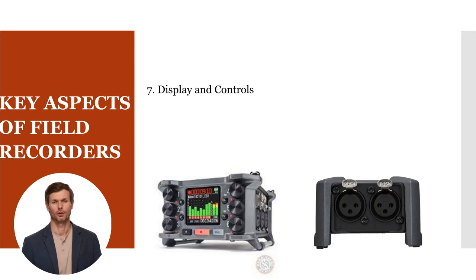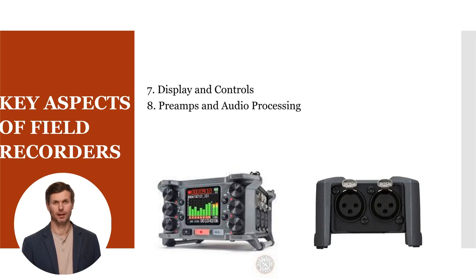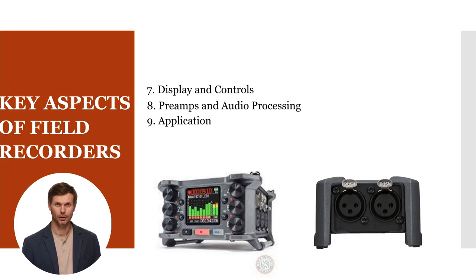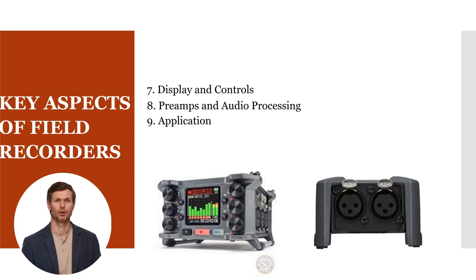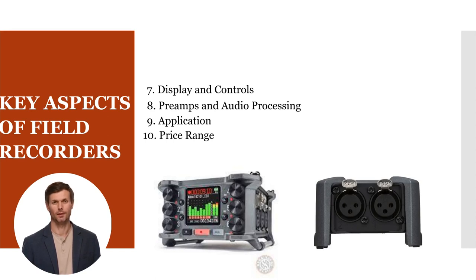Field recorders typically feature user-friendly interfaces with clear displays and easy-to-navigate menus, allowing users to adjust recording settings, monitor audio levels, and control playback. The quality of the microphone and high-quality preamps can provide clean, transparent audio capture. Some models also offer audio processing features like on-board effects and compression. Field recorders are used for capturing environmental sounds, wildlife recordings, location sound for film, podcasting, journalism, and more. They are available from affordable options suitable for hobbyists to high-end, professional-grade recorders used in the film and audio production industry.